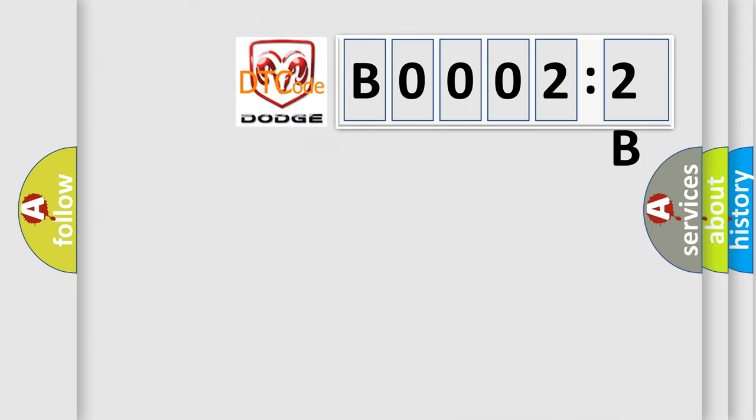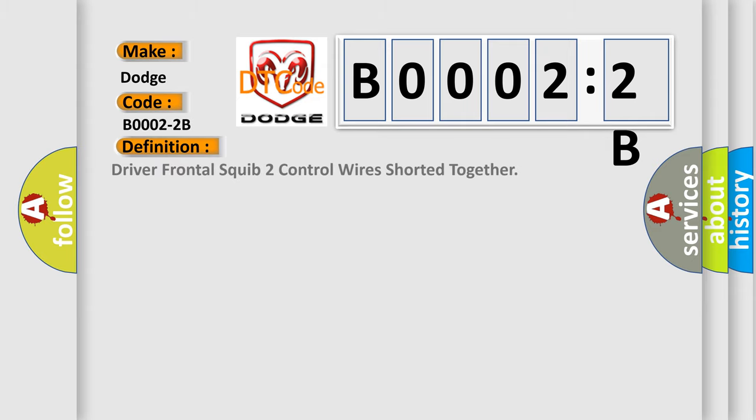So, what does the diagnostic trouble code B0002:2B interpret specifically for Dodge car manufacturers? The basic definition is: driver frontal squib two control wires shorted together.